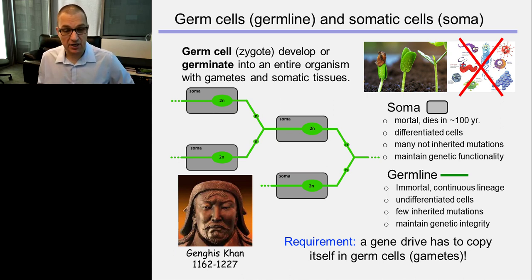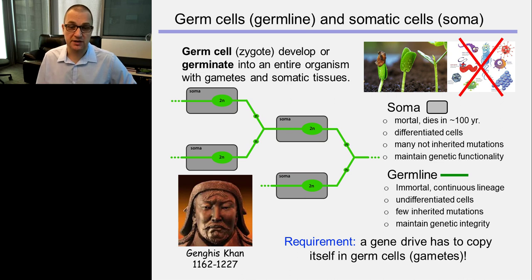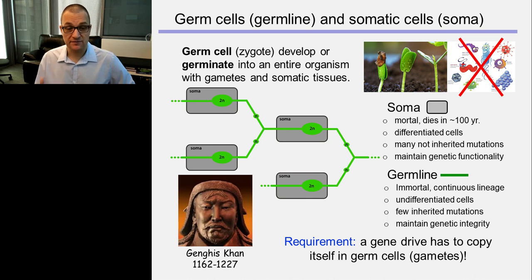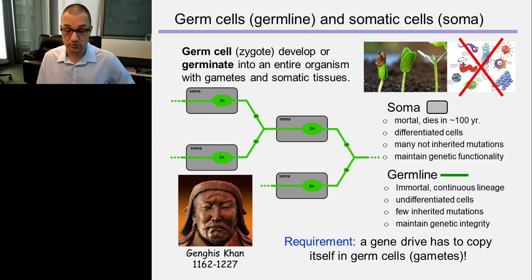Genghis Khan built the Mongol Empire 800 years ago, conquering all of Russia and much of Central Asia. If you go to those regions today and sequence people living there, quite a few will have genes on the Y chromosome that trace their inheritance to this single man. It turns out he was a very prolific father. The persistence of Genghis Khan's genes for more than 800 years among many people shows that the germ line, in a sense, can be immortal. And gene drives have to work — they have to copy themselves in germ cells.